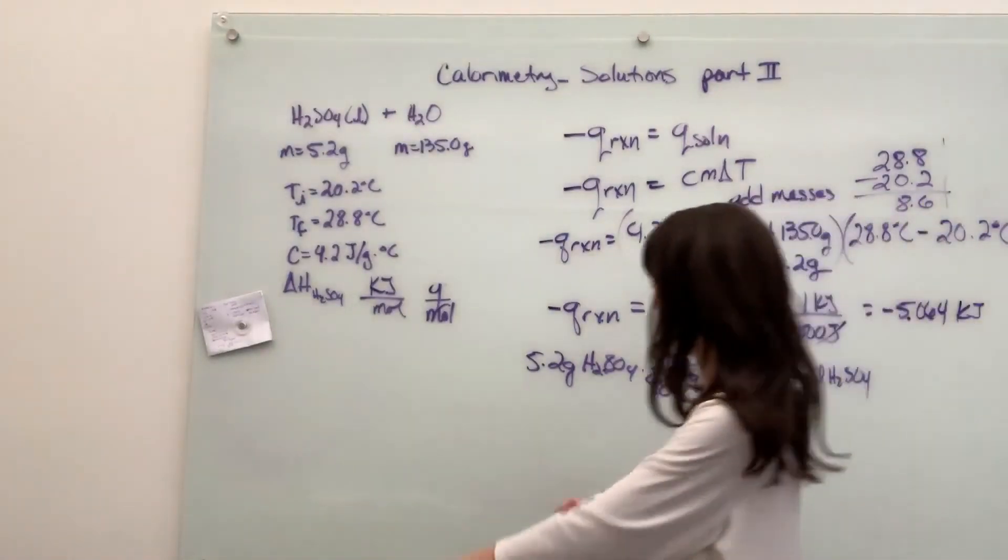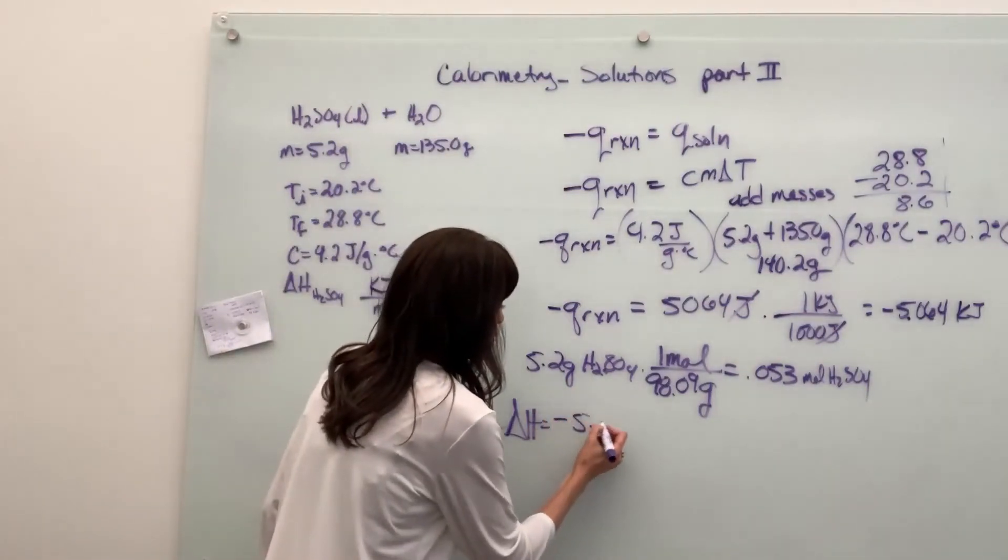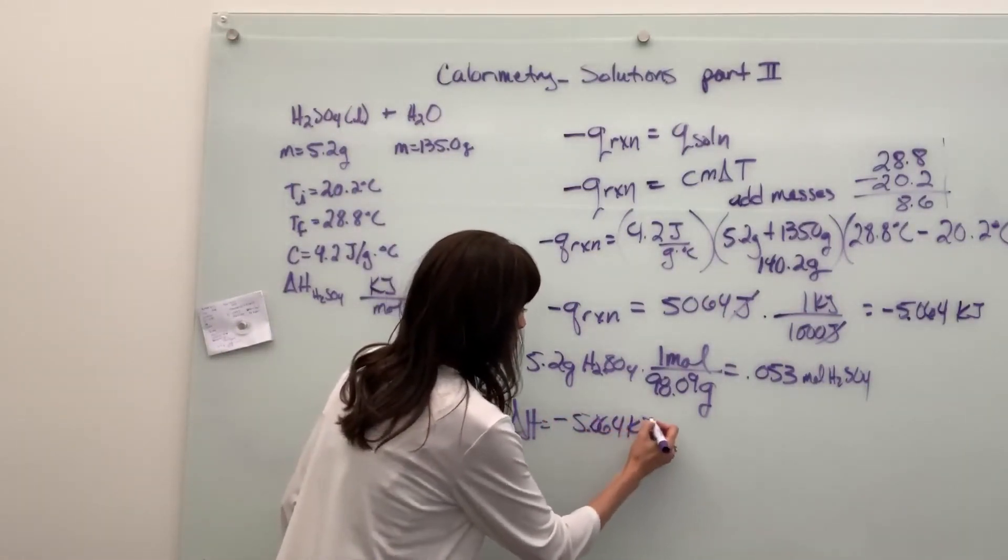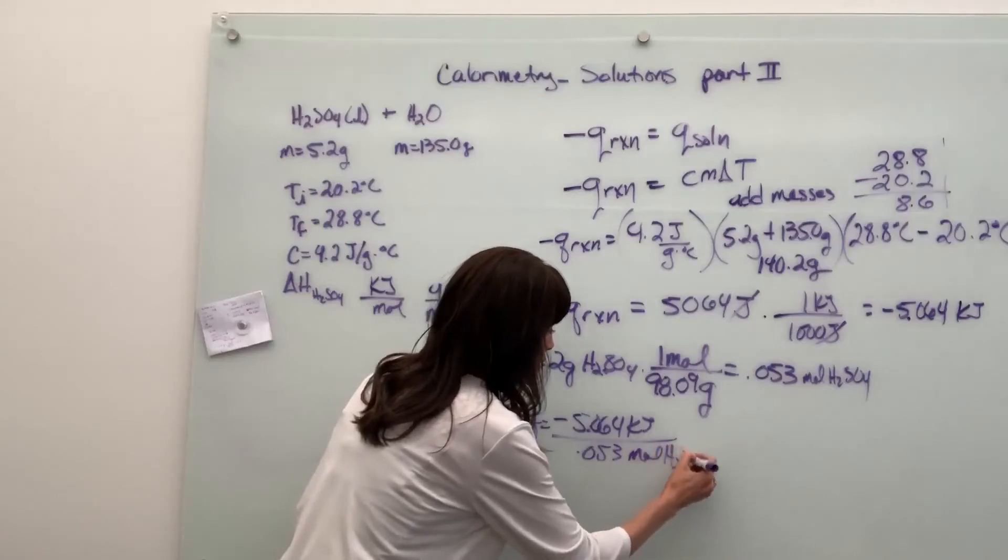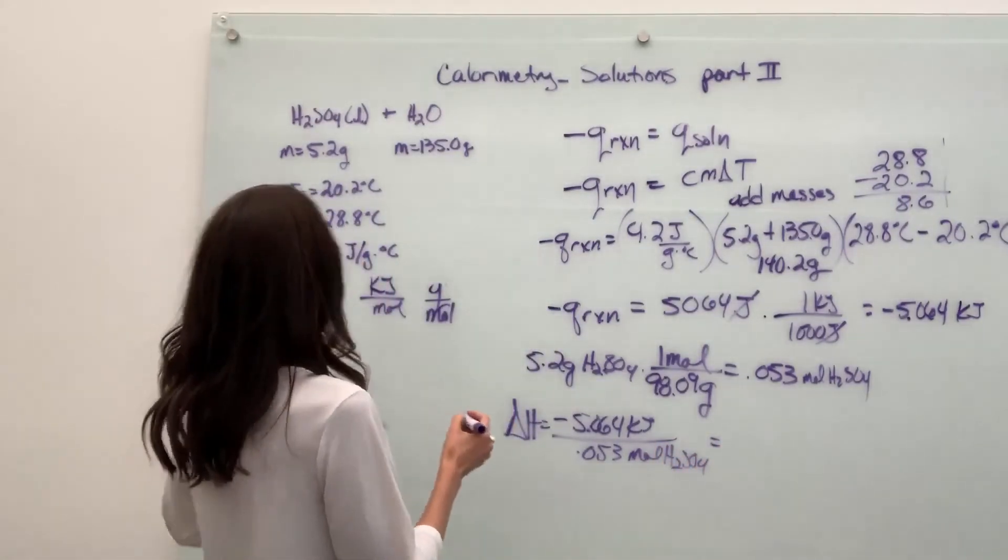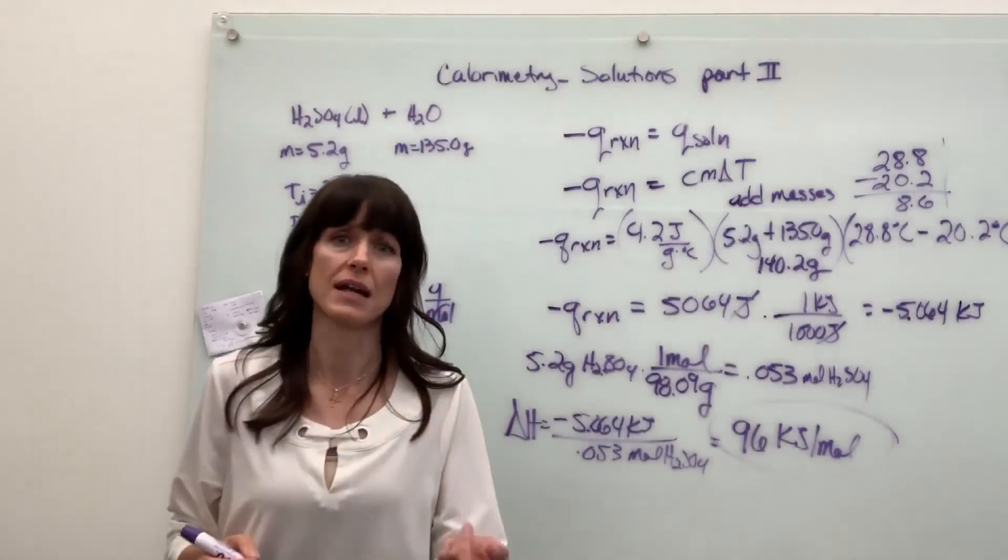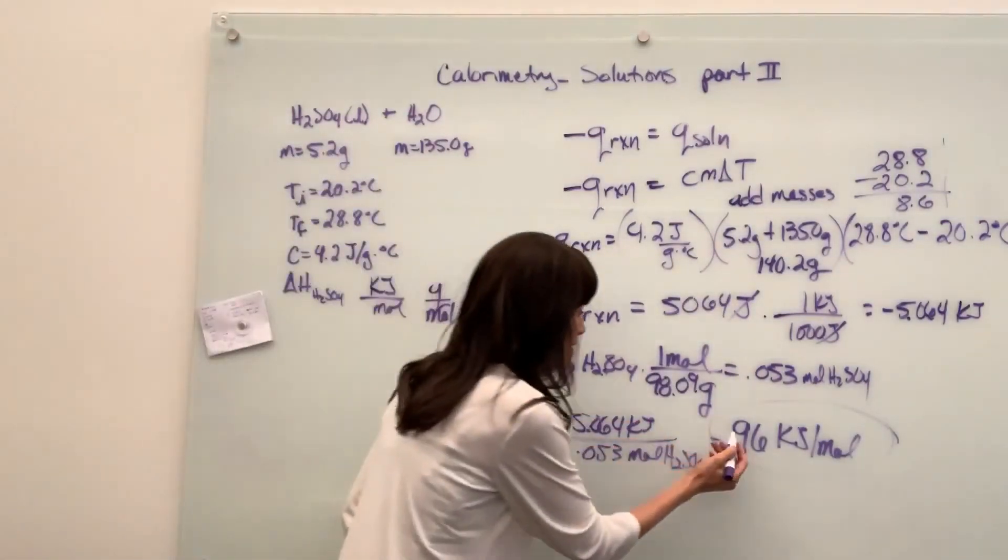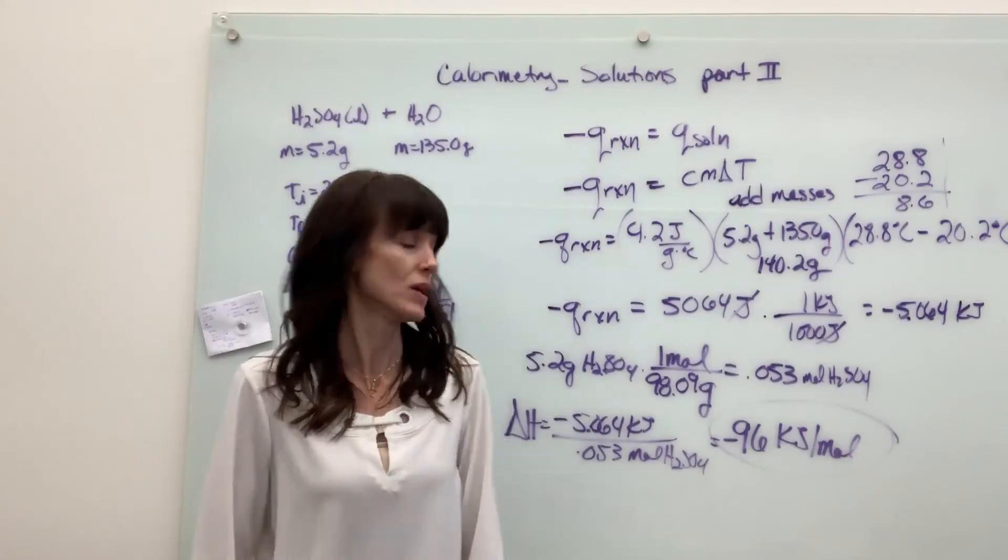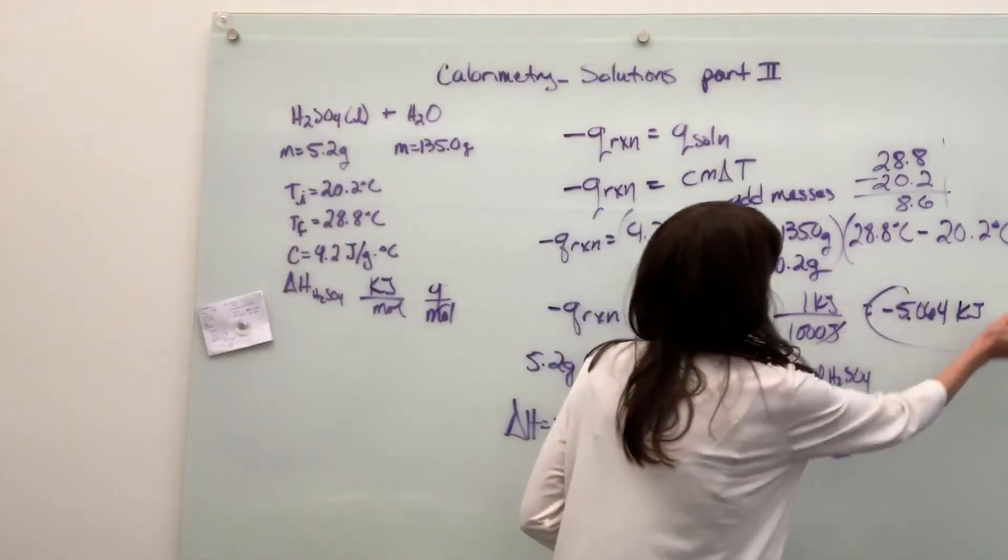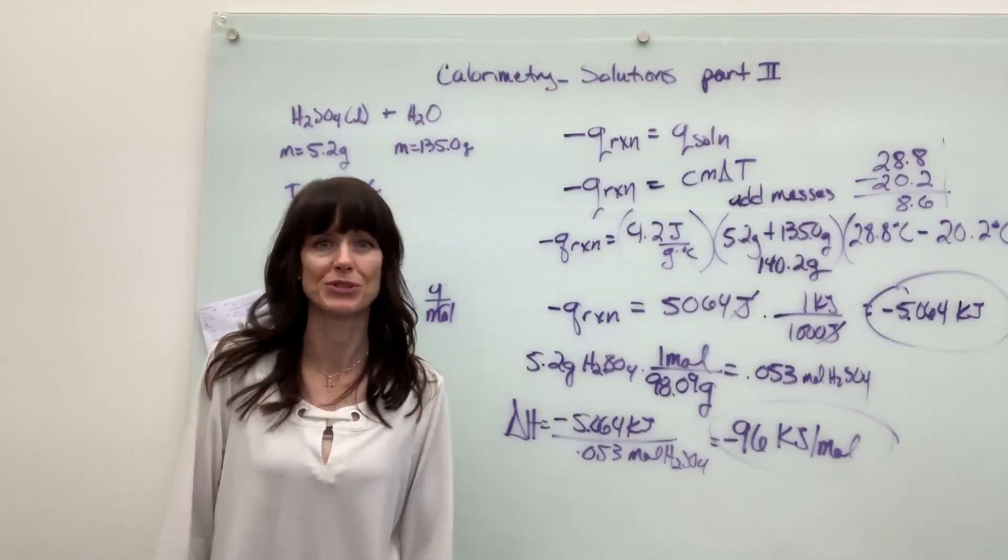Now we can finish it off. Delta H is going to be kilojoules, negative 5.064 kilojoules, divided by moles, 0.053 moles of sulfuric acid. And that is going to give us 96 kilojoules per mole. So for every one mole of sulfuric acid put in the water, it's going to release, sorry I forgot to carry my negative, it's going to release 96 kilojoules. It's a ratio. There's your delta H and this was your Q right there. Very good. Add those masses when you have a solution. Thanks.